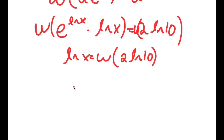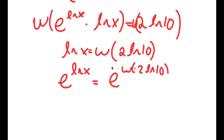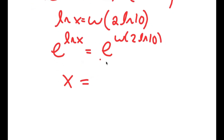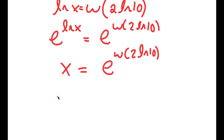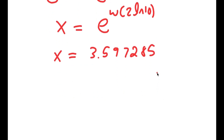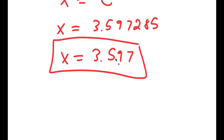Taking e to the power of both sides, I get e to the power of ln x is equal to e to the power of W(2 ln 10). Since e to the power of ln x equals x, I get x is equal to e to the power of W(2 times ln 10), which equals approximately 3.597285, rounding to 3.597. So this is my answer.